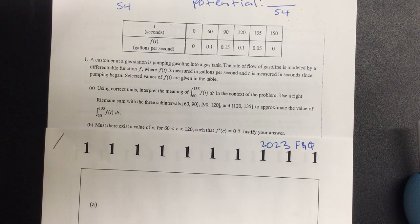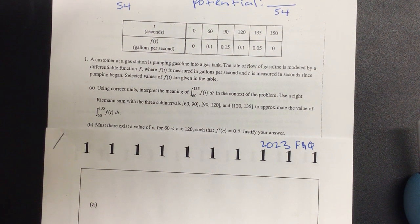A customer at a gas station is pumping gasoline into a gas tank. The rate of flow of gasoline is modeled by a differentiable function F, where F of T is measured in gallons per second, and T is measured in seconds since pumping began. Selected values of F of T are given in the table.